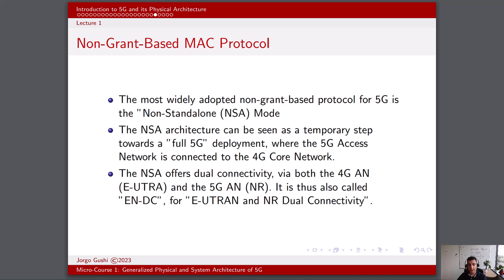To reduce the likelihood of collisions, non-grant-based MAC protocols often introduce randomization elements. For example, devices may wait for a random amount of time before attempting to transmit again after a collision. These protocols are known for their efficiency and scalability, as they do not require a central scheduler. However, they may be less deterministic and may not guarantee certain QoS levels compared to grant-based MAC protocols. Non-grant-based MAC protocols are well suited for low-power devices in scenarios with sporadic or low data rate traffic, such as many IoT applications.